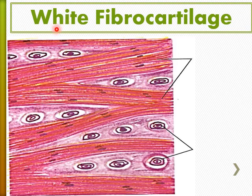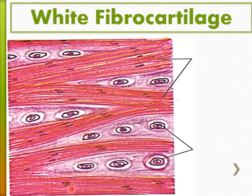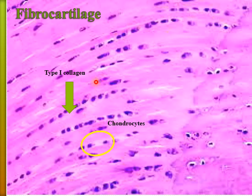The third type is white fibrocartilage. It contains collagen fiber type one, present in bundles. The chondrocytes are present in rows, each inside a lacuna. There is no cell nest, and the matrix is scanty. White fibrocartilage is not surrounded with perichondrium. In the light microscopic picture, collagen type one bundles appear acidophilic, with chondrocytes arranged in rows inside lacunae with scanty matrix.